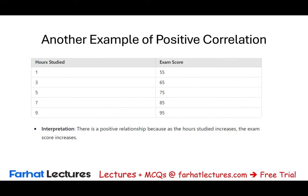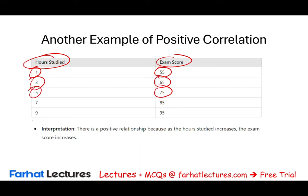Another example of a positive relationship you can relate to: as you study more, your exam score is higher. If you study one hour, you get 55; study three hours, you get 65; study five hours, you get 75. There's a positive relationship — the more hours you spend studying, the higher your exam score.